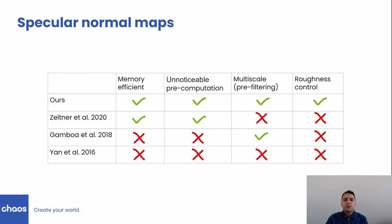The approach by Chermain et al. based on Gaussian elements is the most memory-consuming method of these and requires at least seconds of pre-computation. It employs an acceleration data structure to find all contributing Gaussian elements inside the pixel, but still needs to process all of them sequentially. It does have intrinsic roughness control, but it is designed to work in a small operational range representing specular surfaces. So practically all of these methods do not provide user-controllable roughness.